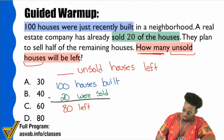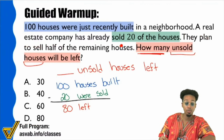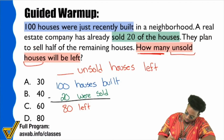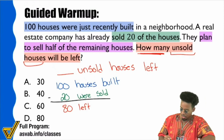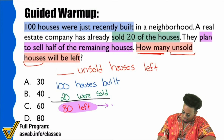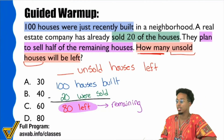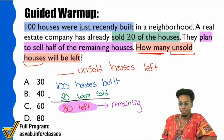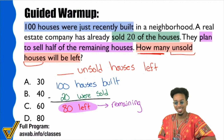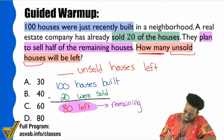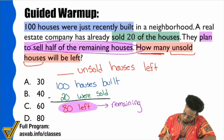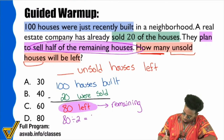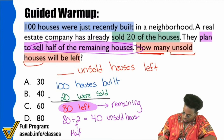Right here it says they plan to sell half of the remaining houses. So let's highlight that. Plan to sell half of the remaining houses — so 80 is the remaining houses. What's another way to say half in math terms? Divide by two. So if we plan to sell half of the remaining houses, that means 80 divided by 2 equals 40. This represents half being sold, so 40 unsold houses are left.